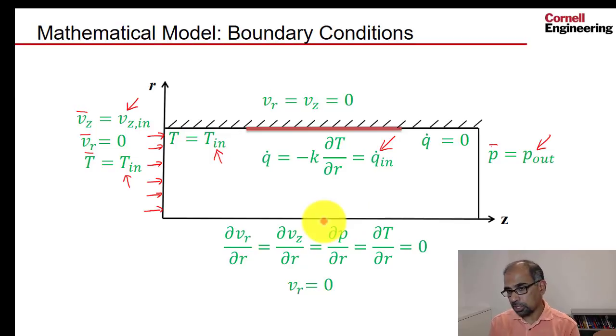So those are the boundary conditions for the mass momentum energy equations. And then you also need to give boundary conditions for the additional turbulence modeling equations, k and epsilon.